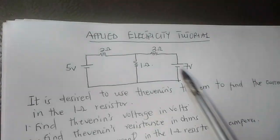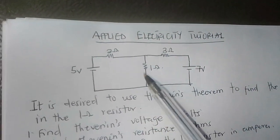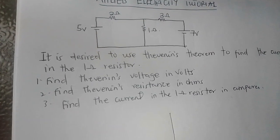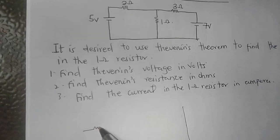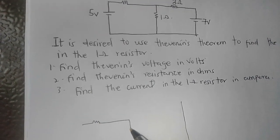When we are given a Thevenin problem, you have to take the resistor into consideration out of the circuit and create an open circuit there. So we have to redraw the circuit and open that part where we have the 1 ohm.